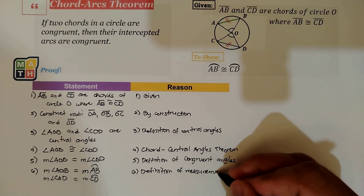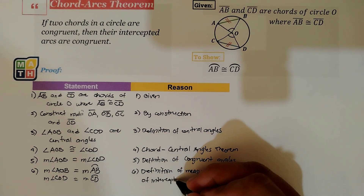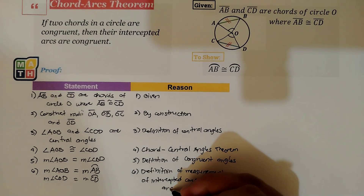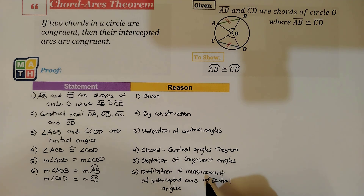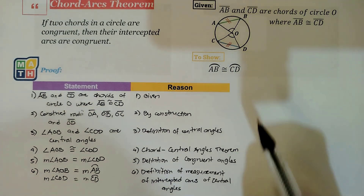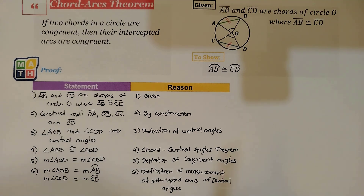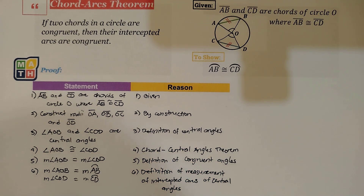The reason we need to pass through measurements rather than staying with congruence is that this definition uses the point of measurement, not congruence. The definition of intercepted arc measurement tells us that the measure of a central angle equals the measure of its intercepted arc. That is why we need to transfer from congruence to measurement before we can proceed to the next step.